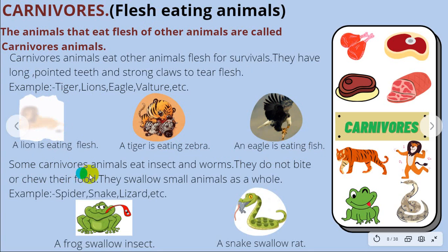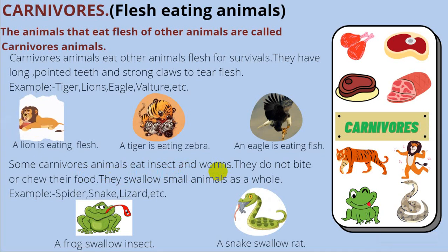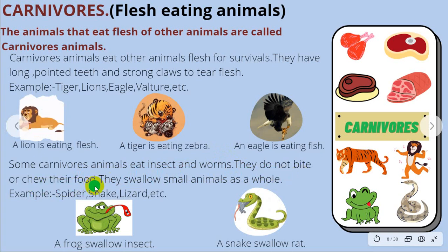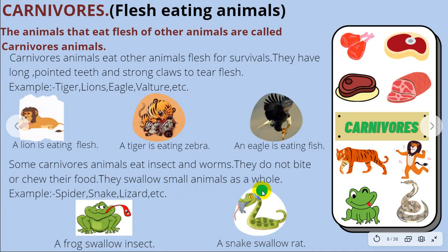Some carnivorous animals eat insects and worms. They do not bite or chew their food. They swallow small animals as a whole.